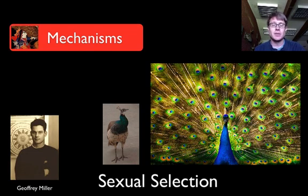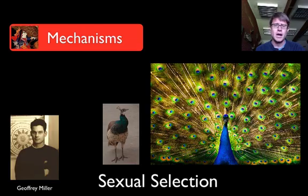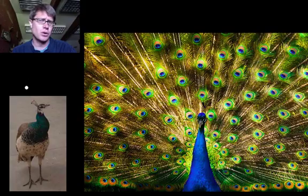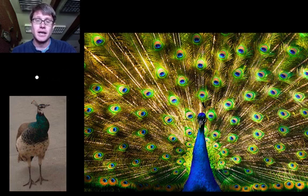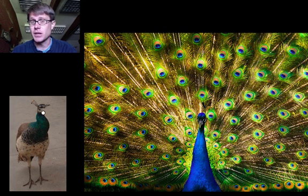The last type of selection is sexual selection. It was proposed by Darwin but not really tested until the 20th century. In sexual selection, the mate is actually doing the choosing. We often see sexual dimorphism — this is a peahen and this is a peacock. We see a huge difference in their appearance because the female is making the choice, not nature.